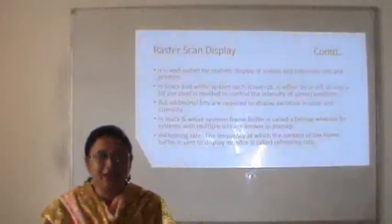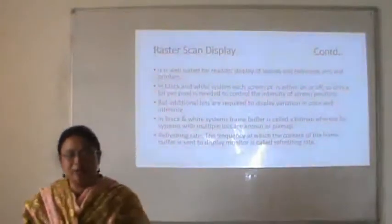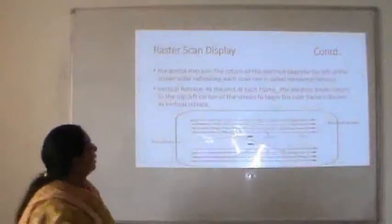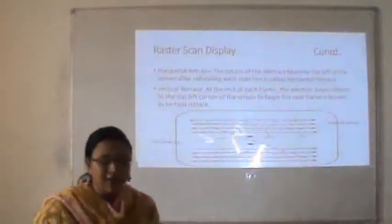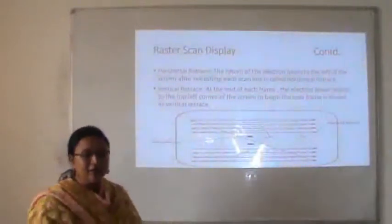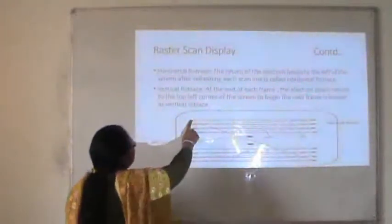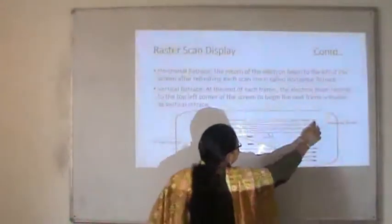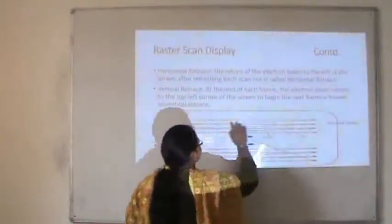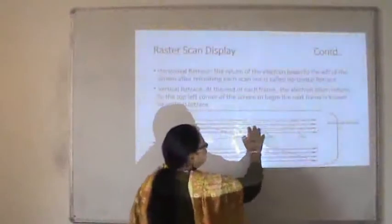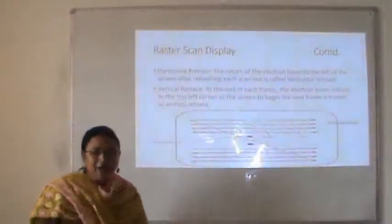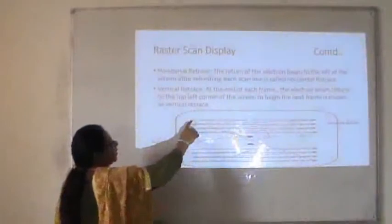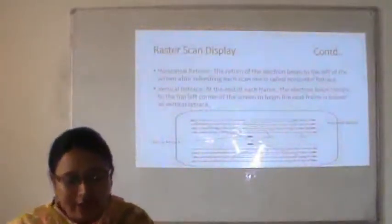Refreshing rate is the frequency at which the content of the frame buffer is sent to the display monitor. Horizontal retrace is the return of the electron beam to the left of the screen after refreshing each scan line — it goes from left to right, then back to the left and right again. Vertical retrace: at the end of each frame, the electron beam returns to the top corner of the screen to begin the next frame.